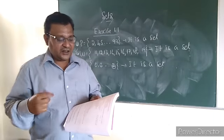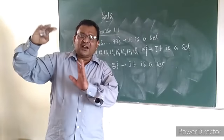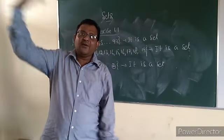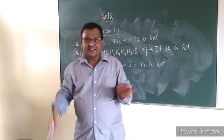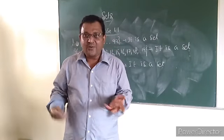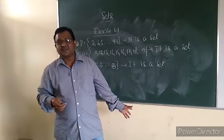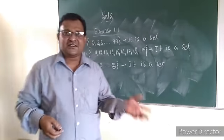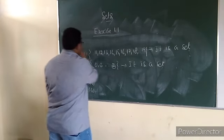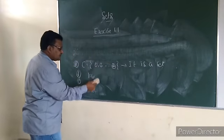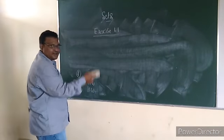F: collection of all tall people in your colony. If a certain height is given — say, collection of all tall people above 5 feet — then it is well-defined. But here, tall means how much? 5 feet is tall, 6 feet is tall, 4 feet is tall — how much? So here also the well-defined condition fails. We cannot say it is a set. All these you have to write in class notes.